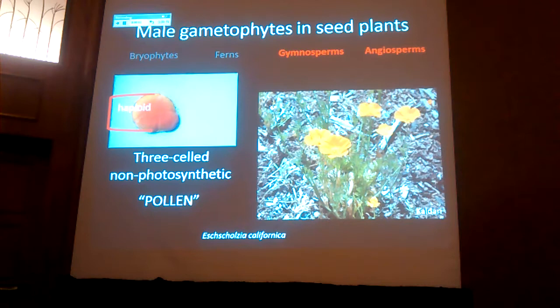And then lastly, in seed plants, the gametophyte generation has become so reduced that it consists of only three cells at maturity in most seed plants, and is not photosynthetic and is not free-living. We call this a pollen grain, although that also includes the spore of the teaching.